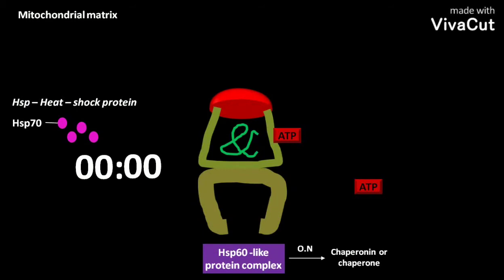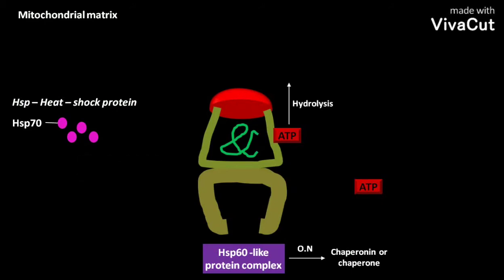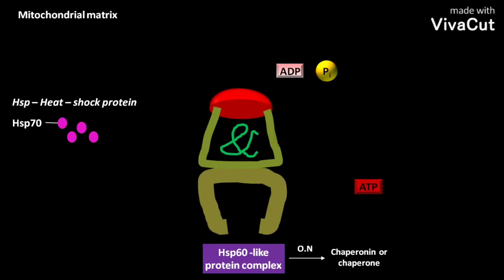After about 15 seconds, the bound ATP undergoes hydrolysis to produce ADP and Pi. As a result, the complex becomes weakened. Then another ATP binds to the barrel, and this binding ejects the correctly folded protein.